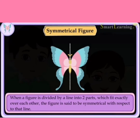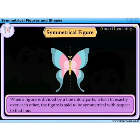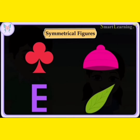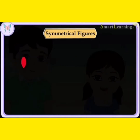When a figure is divided by a line into two parts which fit exactly over each other, the figure is said to be symmetrical with respect to that line. These are some more examples of symmetrical figures. Here, the dotted line represents the axis of symmetry. If this figure is folded along the dotted line, then the two parts fit exactly on each other.